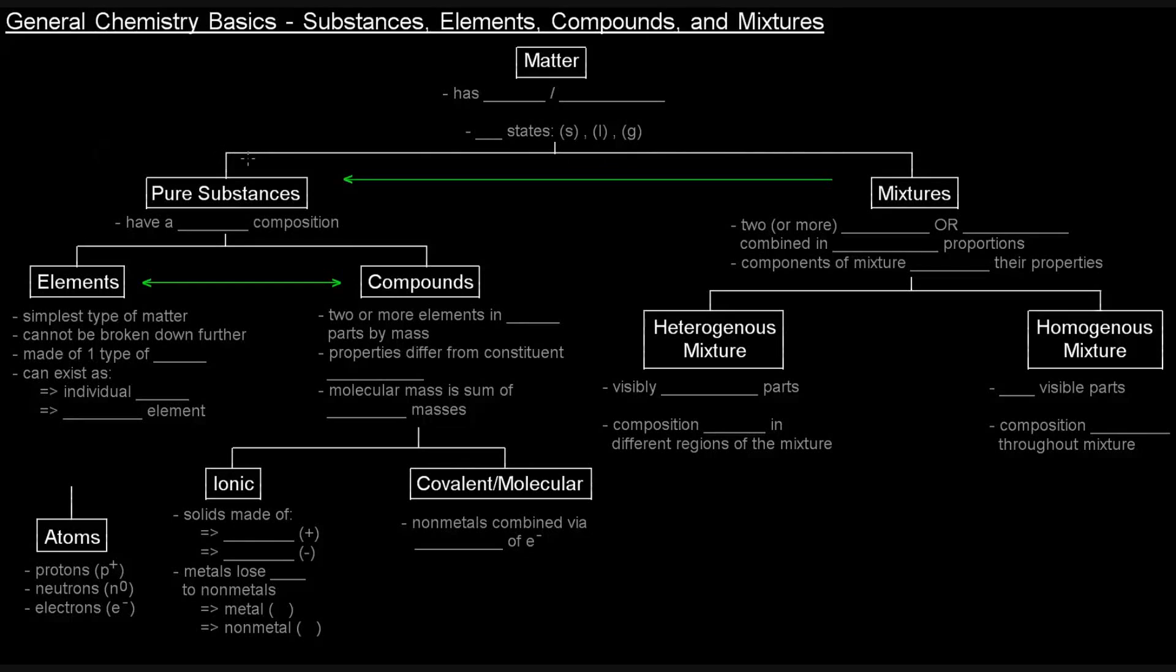In this video I wanted to discuss the different types of matter that we can have. So we're going to talk about substances, elements, compounds, and mixtures. We mentioned before that matter is basically anything that has mass and volume.